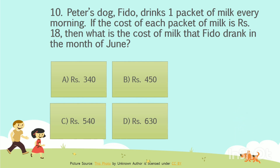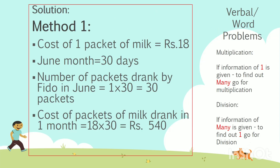The answer is Option C: 540 rupees. Solution for question number 10. The cost of one packet of milk is given, and we have to find out the cost of packets of milk drank in one month. First, we find the number of packets drank by Fido in the month of June. If information of 1 is given, to find out many, go for multiplication. Number of packets drank by Fido in June is 1 packet per day multiplied by 30 days, since June has 30 days. 1 multiplied by 30 equals 30 packets.